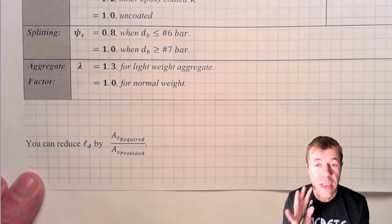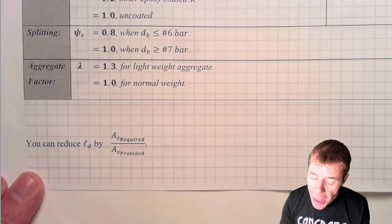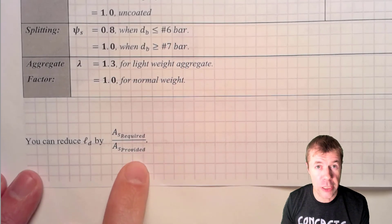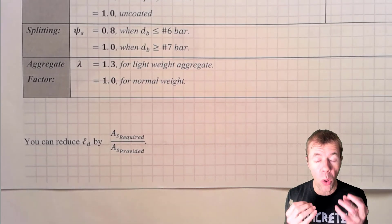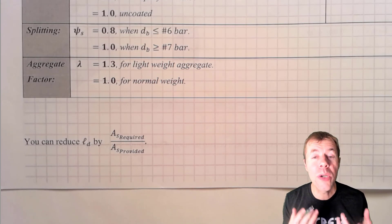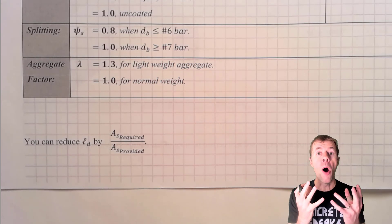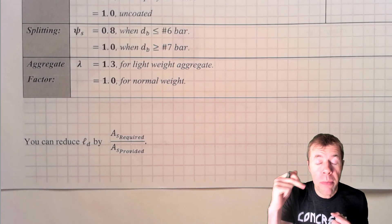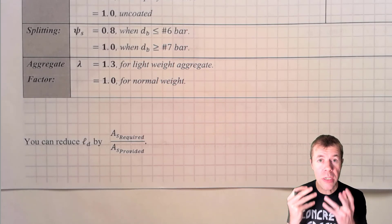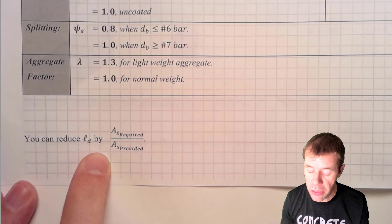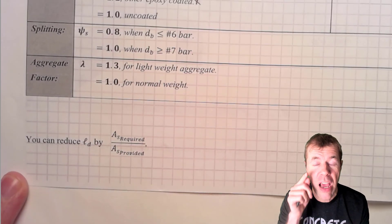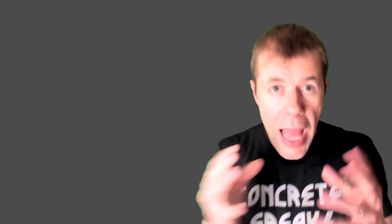Now, you can reduce your designed development length by this AS required over AS provided. That means if I use 20% more steel in my concrete than I really need for my design, or if my moment that I'm providing is 20% more than what I really need for design, this means I can reduce my development length by that ratio. And that can be very valuable sometimes.